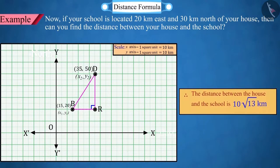So, the distance between the house and the school is 10 square root 13 kilometers.